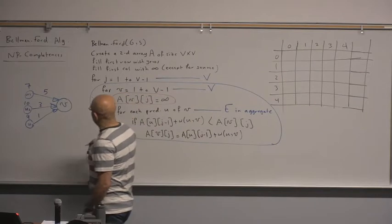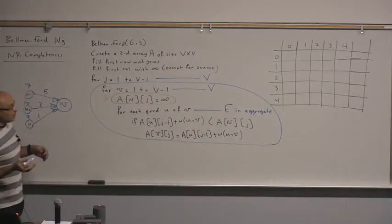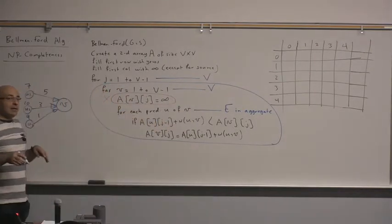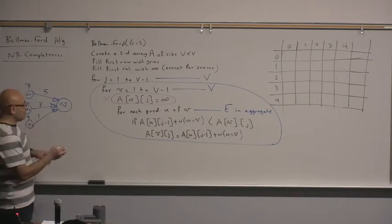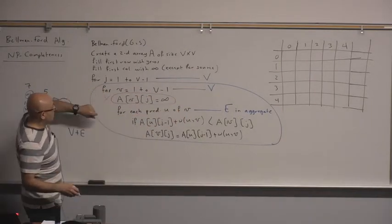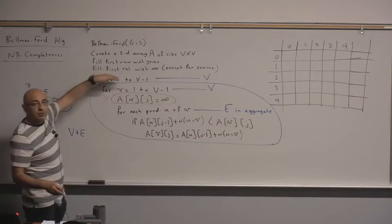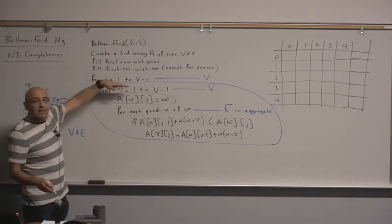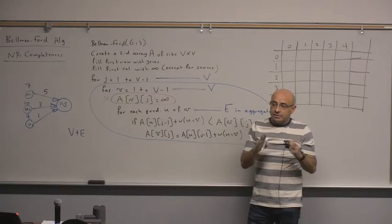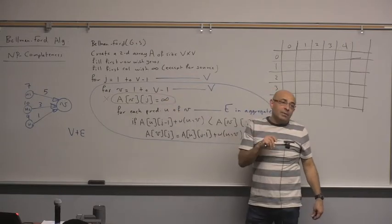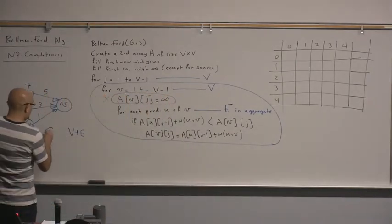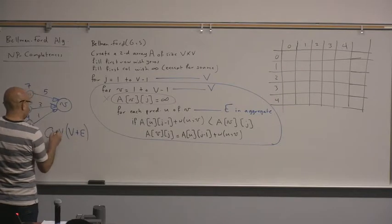Looking at the internal V loop with E in aggregate, we get the familiar V loop with E inside — which is V+E. We have seen this many times in previous algorithms. This V+E is inside the outer loop that executes V times, because each iteration allows a different number of edges, going from one allowed edge up to V minus one allowed edges.